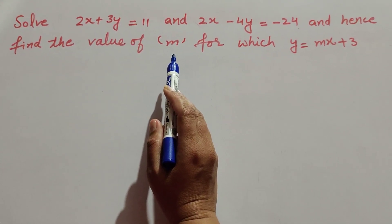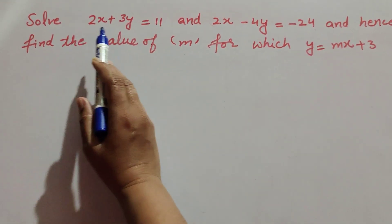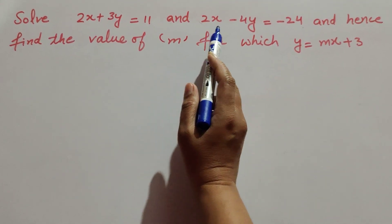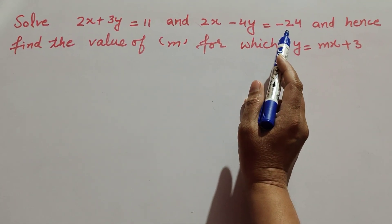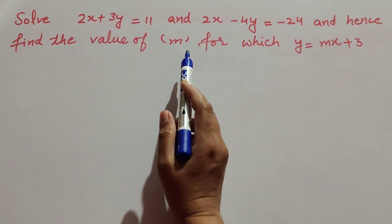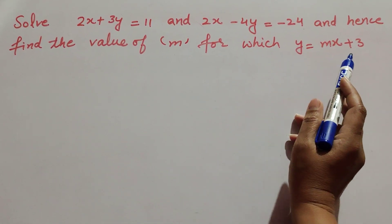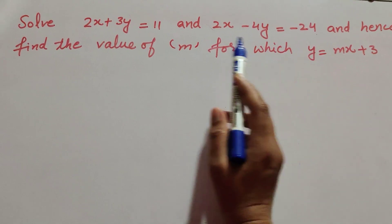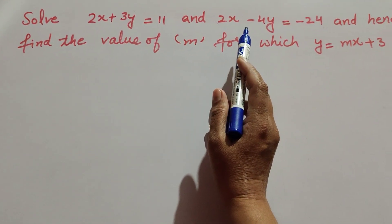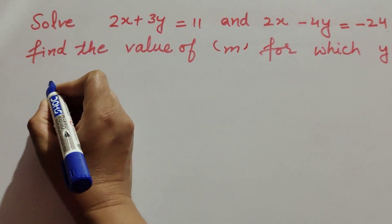Hello friends, welcome to my channel. In this video we solve 2x plus 3y equal to 11 and 2x minus 4y equal to minus 24, and hence find the value of m for which y equal to mx plus 3. There is a pair of linear equations given; first we solve these linear pair of equations.